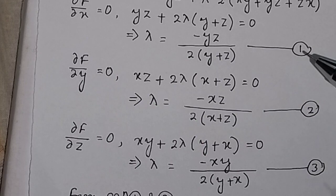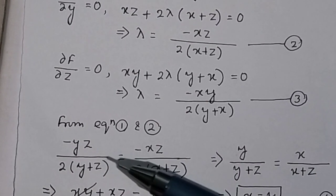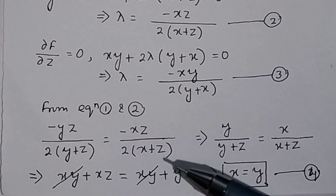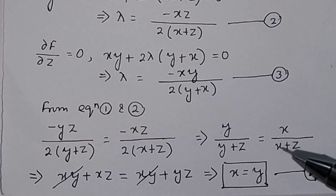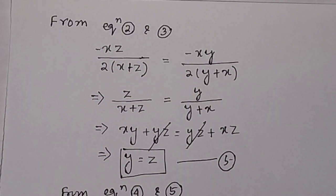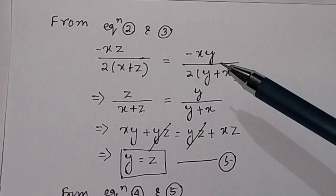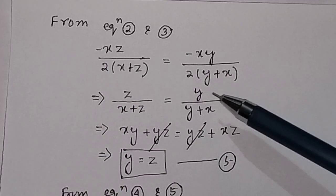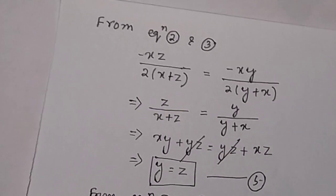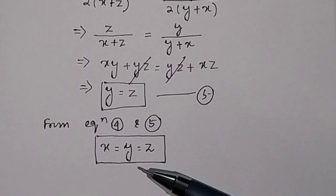Equating Equation 1 and Equation 2: −yz / 2(y + z) = −xz / 2(x + z), which simplifies to y/(y + z) = x/(x + z), giving us x = y. Similarly, equating Equation 2 and Equation 3: −xz / 2(x + z) = −xy / 2(y + x), which gives y = z. From these two results, x = y and y = z, so x = y = z.